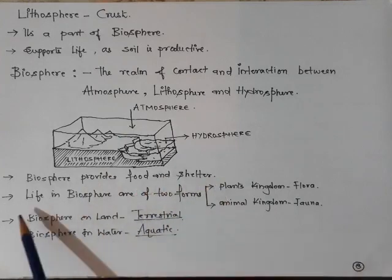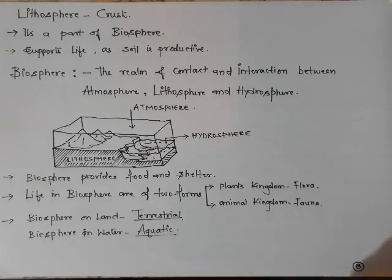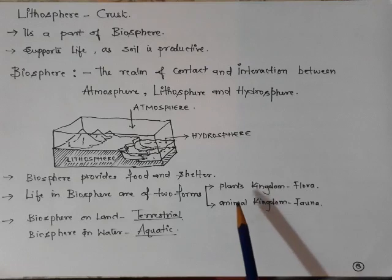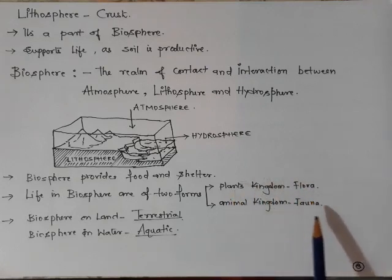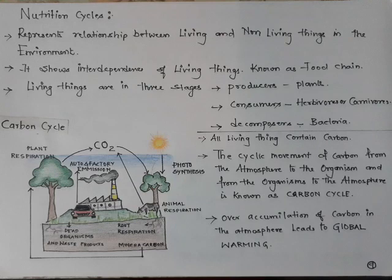The biosphere provides food and shelter. Life in the biosphere is of two forms: the plant kingdom, known as flora, and the animal kingdom, known as fauna. All the natural vegetation distributed on the surface of the earth is known as flora — for example, tropical deciduous forest, tropical evergreen forest, equatorial evergreen forest, and savannah grasslands. The type of natural vegetation determines the type of animal life. The biosphere on land is called terrestrial, while the biosphere in water is called aquatic, which can be freshwater or marine.